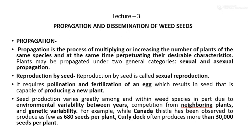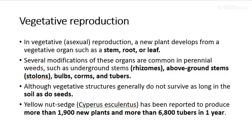Seed production varies greatly among and within species, partly due to environmental variability between years, competition from neighboring plants, and genetic viability. For example, Canadá thistle has been observed to produce around 680 seeds per plant, while curly dock often produces more than 30,000 seeds per plant.